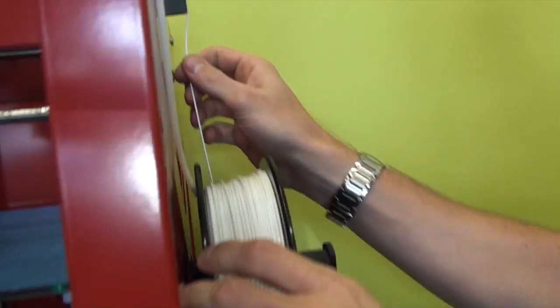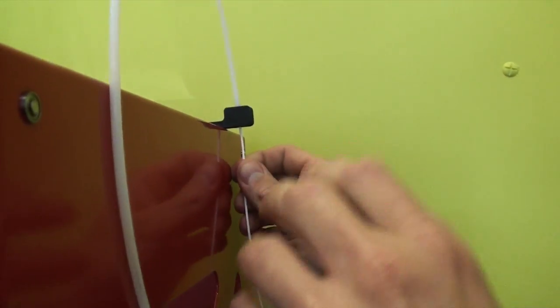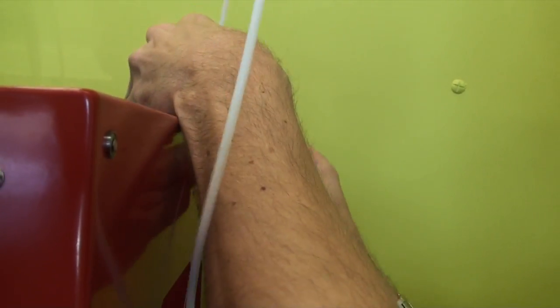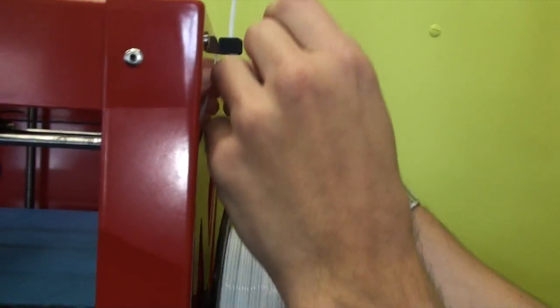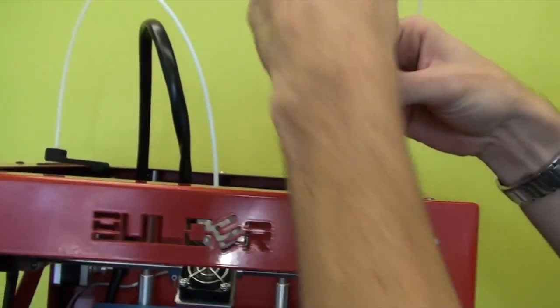Slot it on the holder. Now feed it through the tube until it comes out the other side.